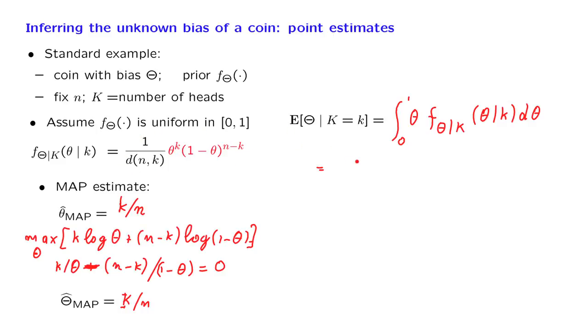And the integral ranges from 0 to 1 because this is the range of our random variable theta. Now, we have a formula for the posterior density, so we need to just multiply this expression by theta and then integrate. This term here is a constant, so it can be pulled outside the integral.